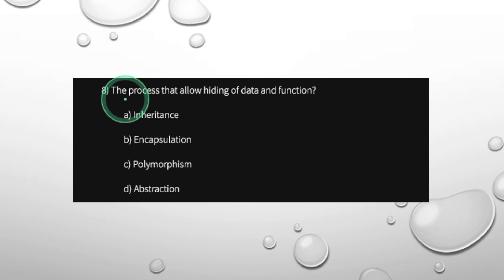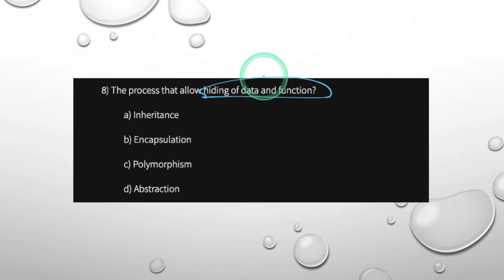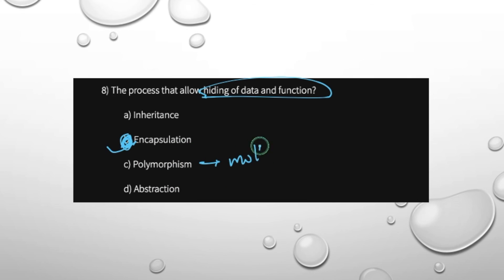The process that allows the hiding of data and functions is called encapsulation. Polymorphism means multiple forms. These are key concepts in object-oriented programming.